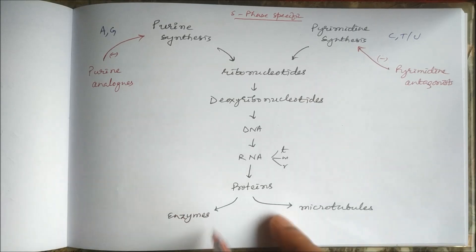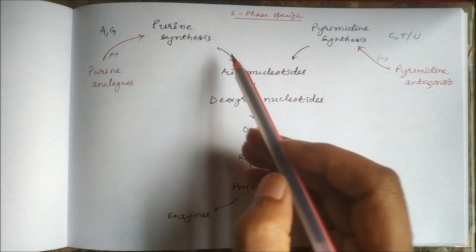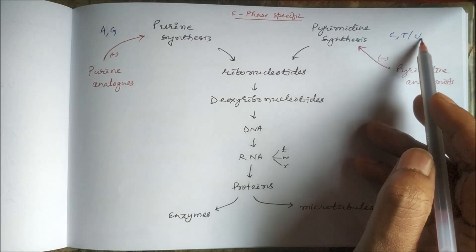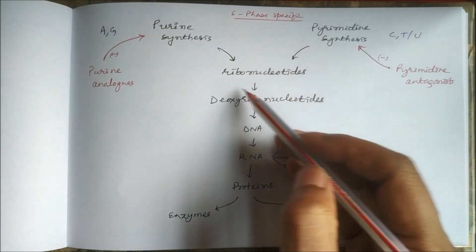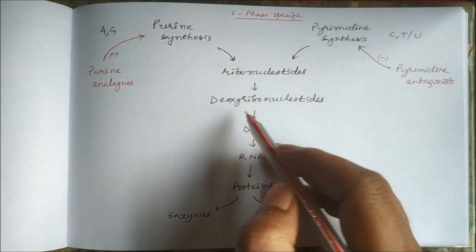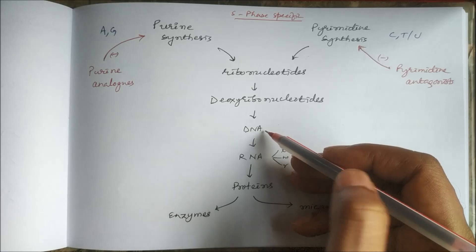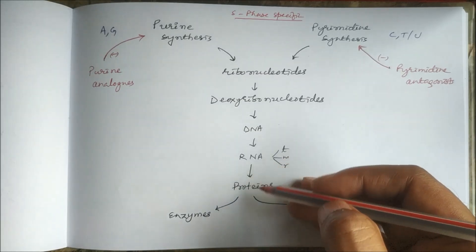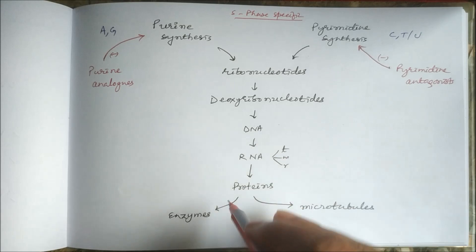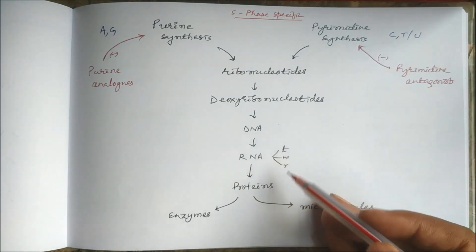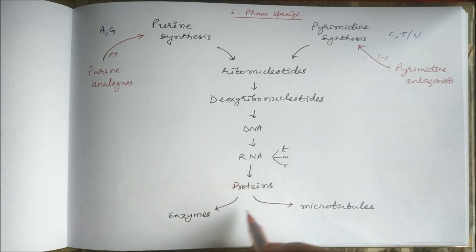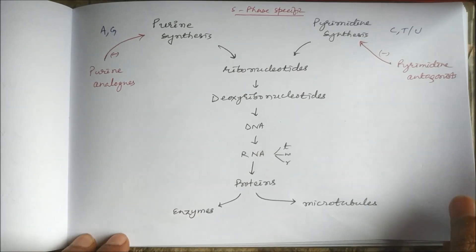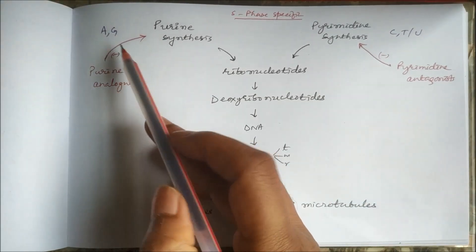Purines like adenine and guanine, and pyrimidines like cytosine, thymine, or uracil initially synthesize ribonucleotides, from which deoxyribonucleotides are synthesized, from which DNA is synthesized. By transcription, messenger RNA is formed, which is useful in protein synthesis along with transfer RNA and ribosomal RNA. These proteins include enzymes and microtubules, which have a role in cell division.